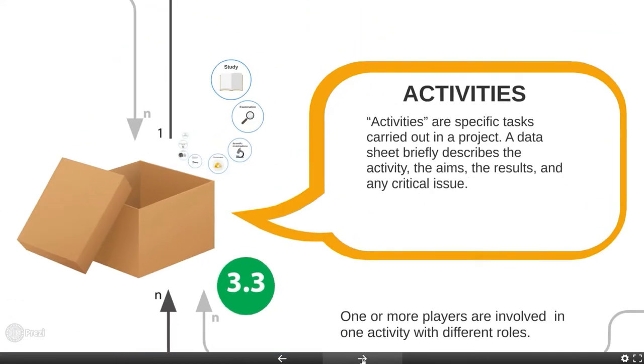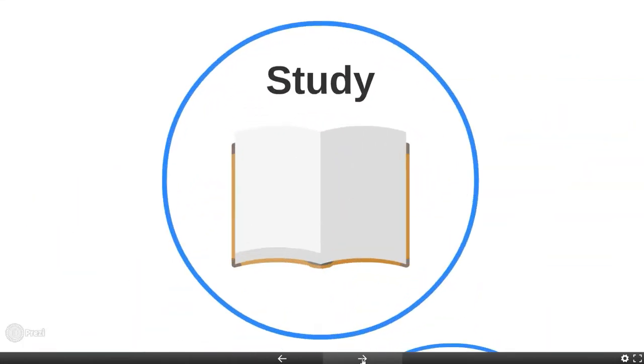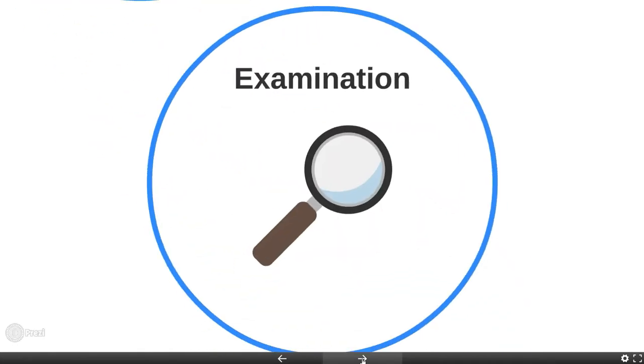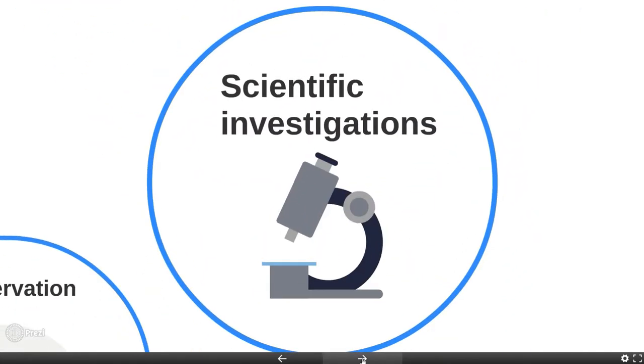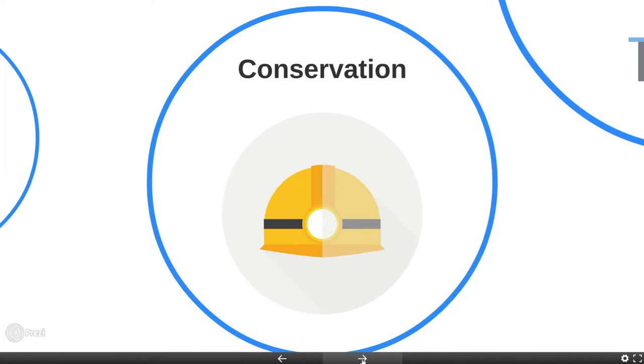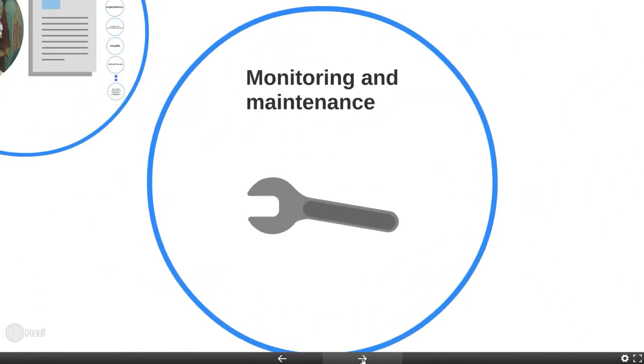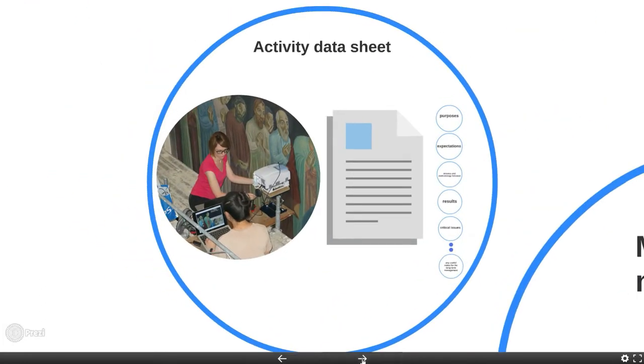Many types of activities can be carried out as part of a project, and may include historical and archival research, visual examination, scientific investigation, restoration interventions, monitoring, maintenance, and much more. A single activity can involve one or more cultural properties.